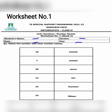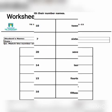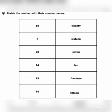So we start matching. In the first column you can see here ten. We match ten with its number name. Ten is spelled T-E-N.